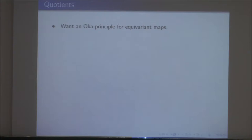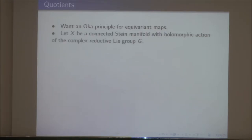What Kutzschebauch proposed to Thibaut and myself was to find an Oka principle for equivariant maps. We start out with a Stein manifold with a holomorphic action of a complex reductive group G.